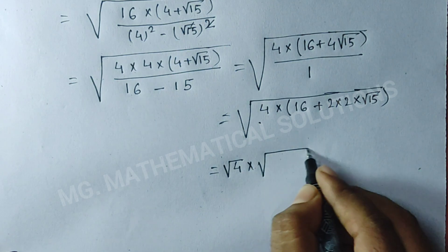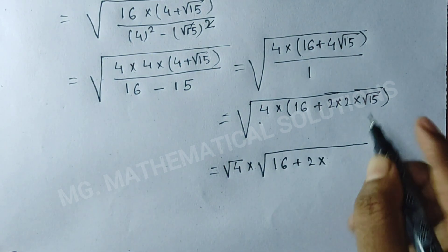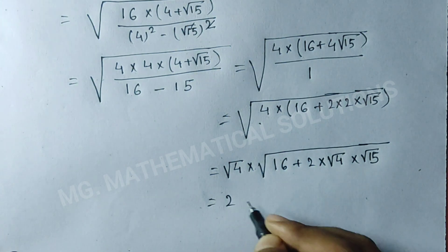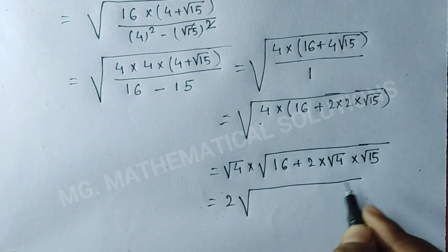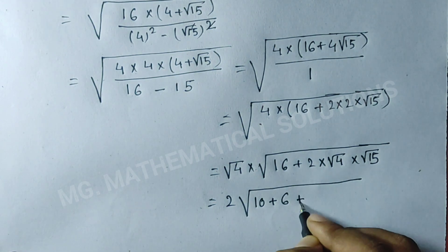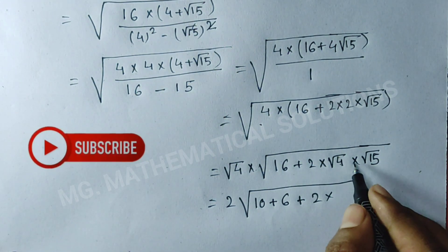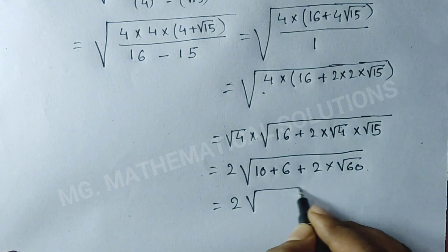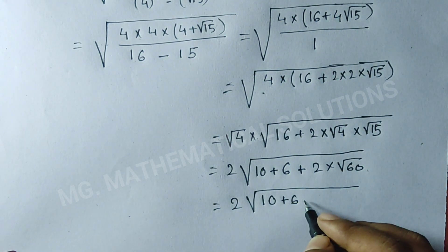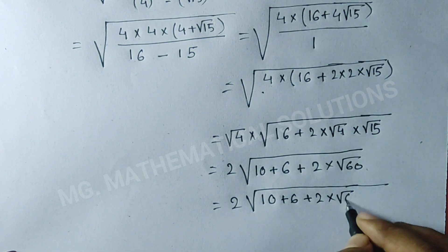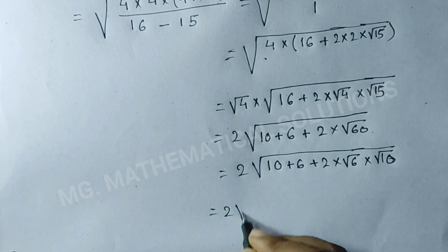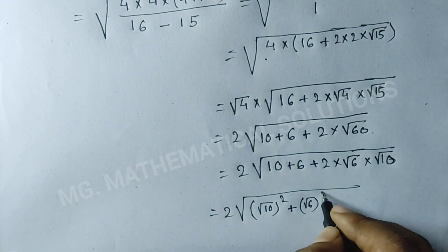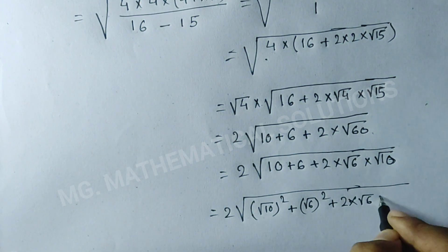We can write 16 as 4 times 4, and expand to get root of (4 times 16 plus 4 times root 15). Now we write 16 as (10 plus 6), and 4 times root 15 as 2 times root 60, which equals 2 times root 6 times root 10.